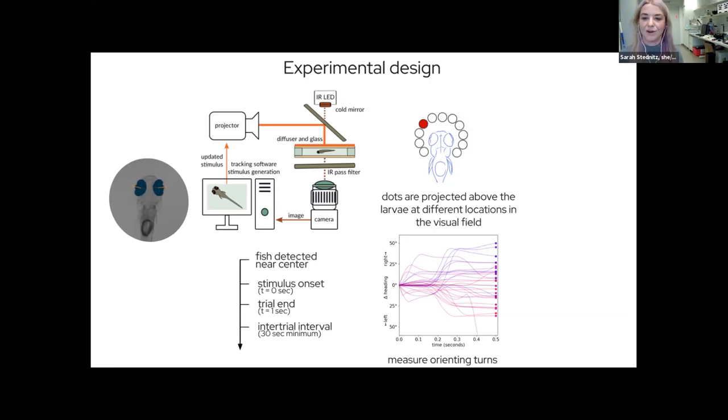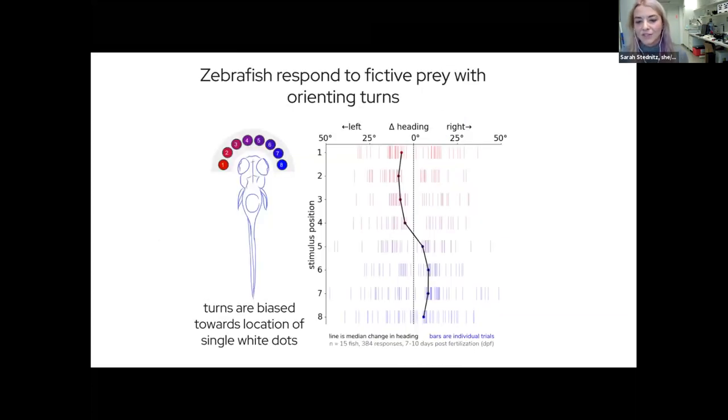The first test was to make sure that we really could get these animals to chase light. We ran experiments using just single white dots placed at eight possible locations in the visual field—some on the left side and some on the right side. If you look at the change in heading, the orienting body turns within one second after stimulus onset, when you present a stimulus to the left we can get them to turn to the left.